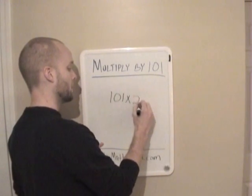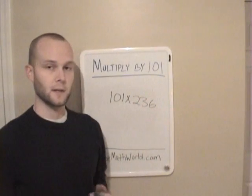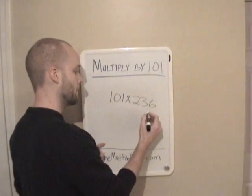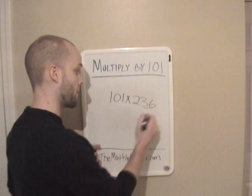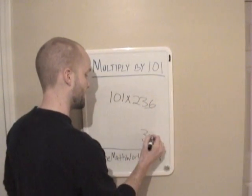Let's take 101 times 236. The first thing we're going to do is we're going to write down the first two numbers, 36. And that's part of our answer.